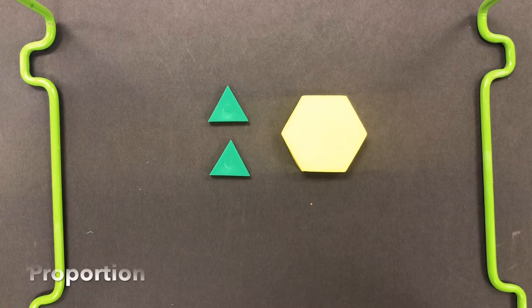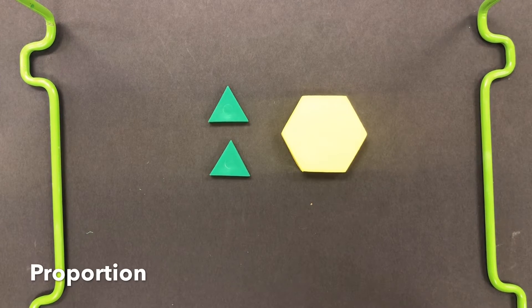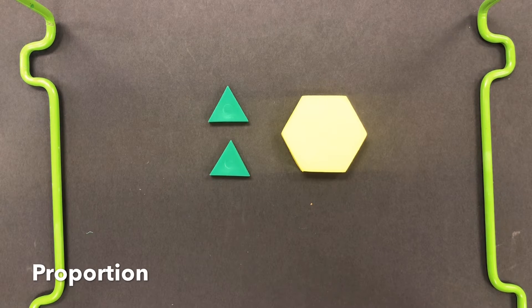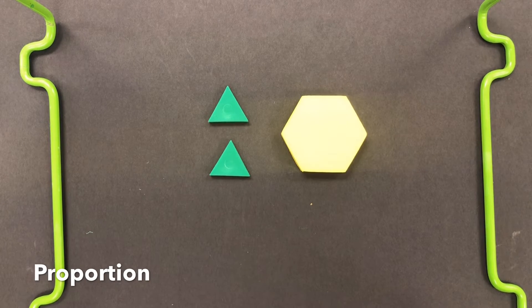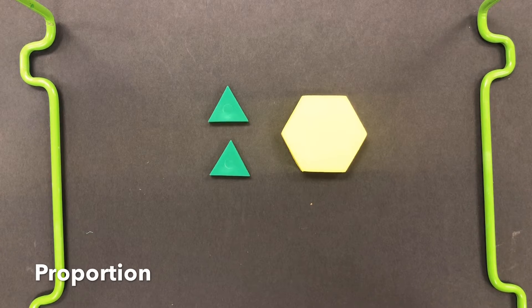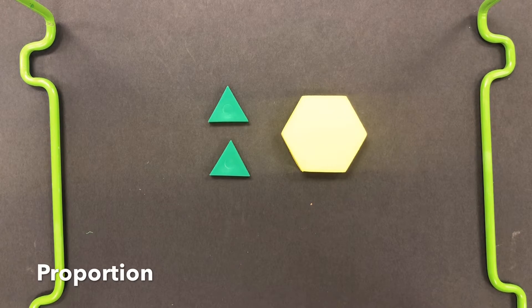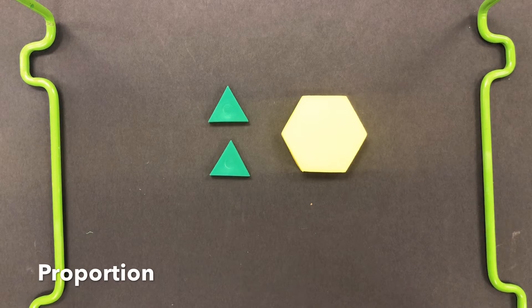Proportion is the size relationship between two or more objects. It can be how the parts fit together to make a whole. Accurate proportions are often used for creating realistic images like portraits of faces. Distorted proportions are used more for cartoons or fantasy.